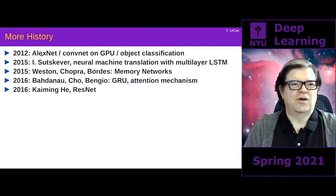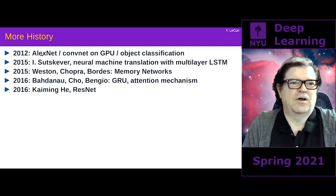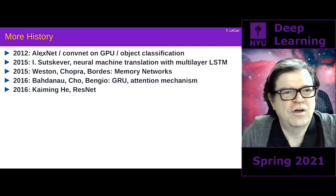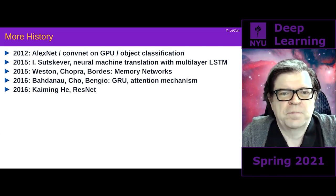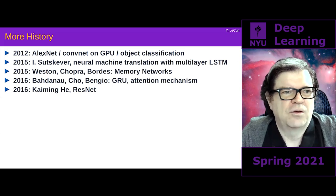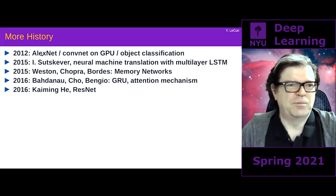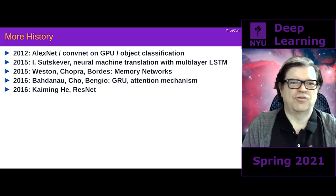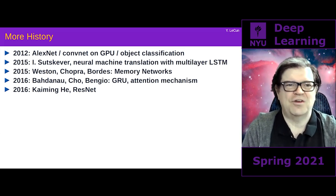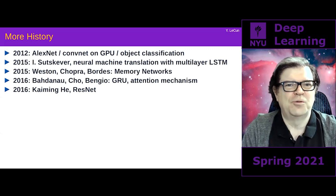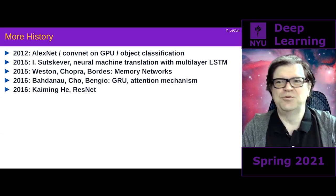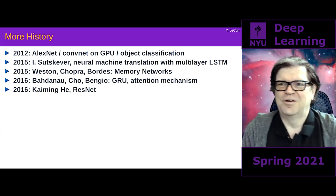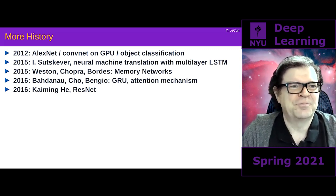We at NYU had also been working on convolutional nets for various things, but we were not as fast to implement things on GPU, so our applications were good but not as spectacular. Then three years later, Ilya Sutskever — working at Google at the time, now leading OpenAI research — showed that you can use multilayered LSTMs for neural machine translation and basically match the performance of traditional machine translation systems.